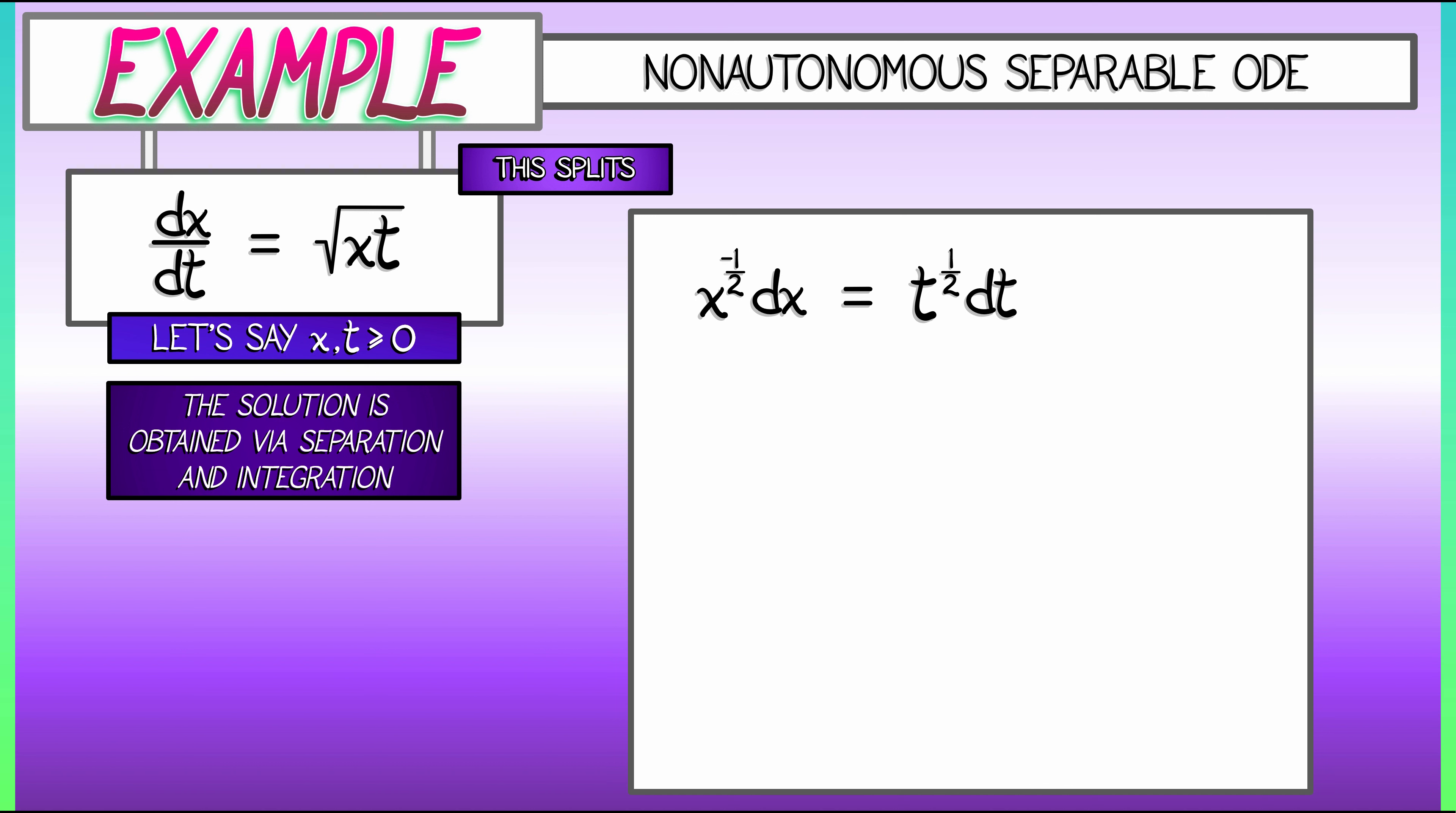Having separated, we can integrate both sides. On the left, the integral of x to the negative one-half dx is x to the positive one-half times 2. On the right-hand side, the integral of t to the one-half dt is t to the three-halves times two-thirds, and then don't forget the plus c. Gotta remember the constant.